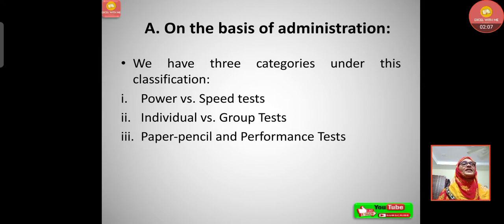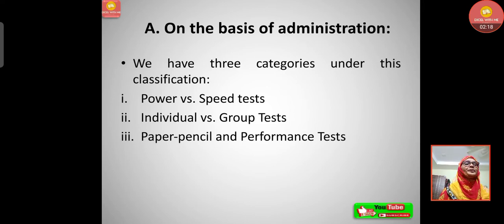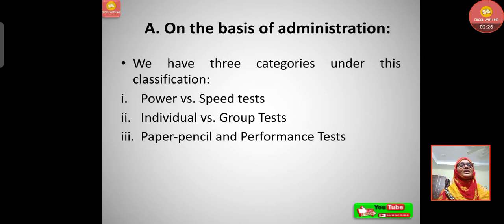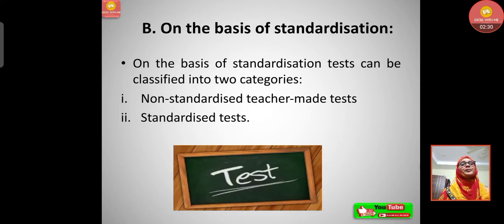On the basis of administration we have three categories: power versus speed tests — that is, how much power that person has and the speed, maybe in sports they can take these tests — then individual versus group tests, where individual tests can be taken or some group tests can also be performed, and then paper-pencil and performance tests.